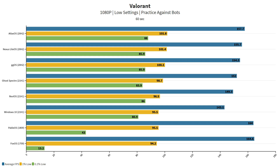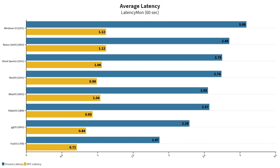Now looking at average latency tested with LatencyMon for 60 seconds: Windows 10 is the highest but not by a lot. One thing to mention about power plans — each ISO came with its own power plan except a couple. For those that didn't have one I just used Windows High Performance. I didn't import Ultimate Performance or use the same power plan across each one, so keep in mind that may affect the latency numbers. For example with Ghost Specter I didn't have a power plan and the latency was bad; after applying one it got better. Windows 10 is highest, with Nexus up there too.